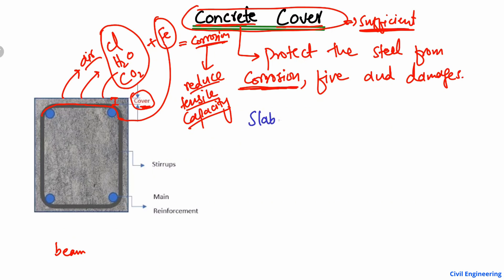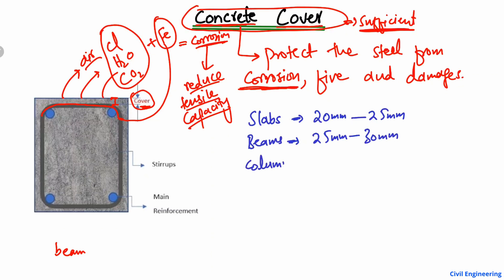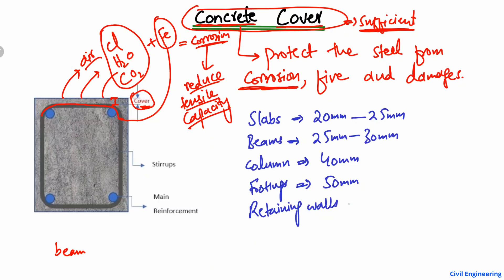For slabs, the concrete cover ranges from 20 millimeters to 25 or 30 millimeters, depending on the structural design and location of the structure. For columns, the value is mostly in the range of 40 to 50 millimeters. For footings, the minimum value provided is 50 millimeters. For retaining walls, this value ranges from 20 to 50 millimeters. Keep in mind the footing value is a minimum of 50 millimeters.